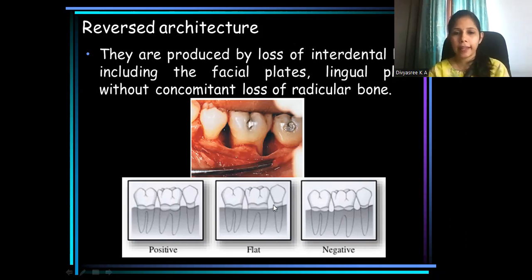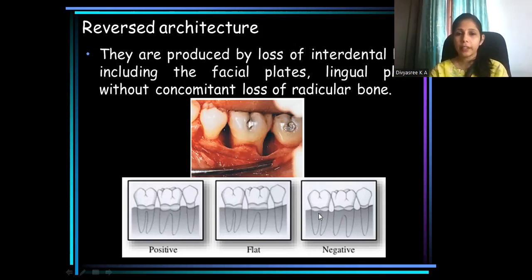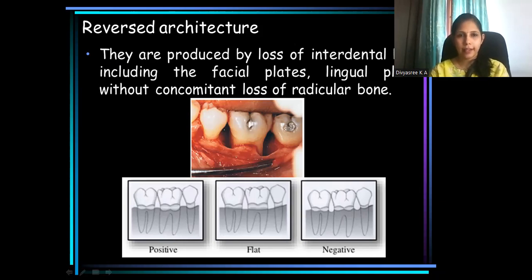In some cases, mainly in periodontal disease, you can see a reverse architecture or negative bone architecture — produced due to loss of interdental bone including the facial plates and lingual plates without concomitant loss of radicular bone. So here radicular bone will be intact but there will be loss of interdental bone.